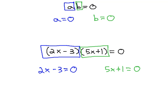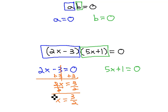This gives us two equations we can quickly solve for x by adding 3, giving us 2x equals 3, and dividing by 2. The first possibility for x is 3 halves.